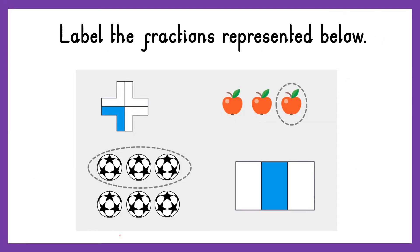Pause the video here and write down the unit fractions. You should have got one out of four, which is a quarter. One circled out of three, which is a third. And here, half of the balls are circled — one group out of two groups altogether.